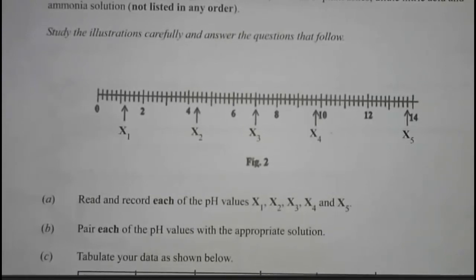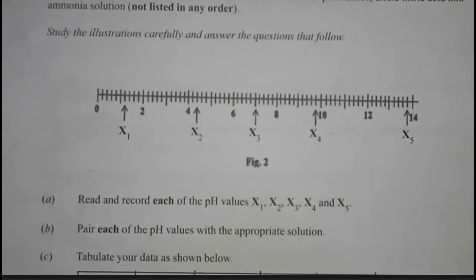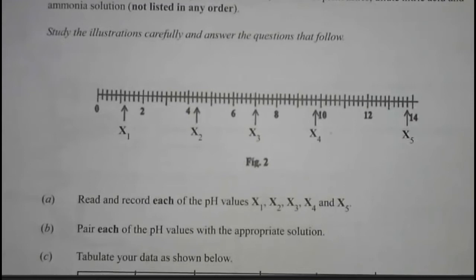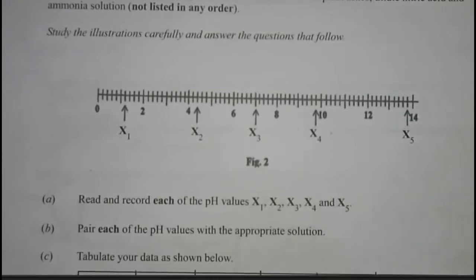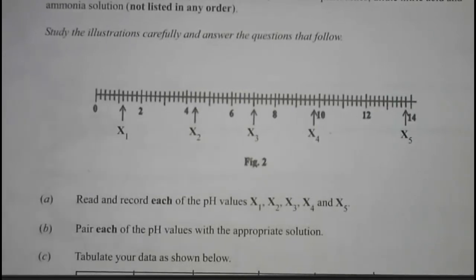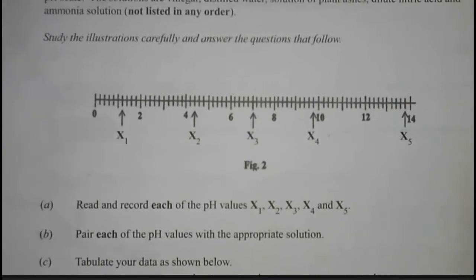Solutions containing high concentrations of hydrogen ions or hydronium ions have low pH and are said to be acidic. Solutions containing high concentrations of hydroxide ions have high pH values and are said to be alkaline. Solutions with a pH midway between highly acidic and highly alkaline — that is pH 7 — are said to be neutral. That is a brief intro about pH and the pH scale.